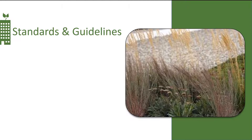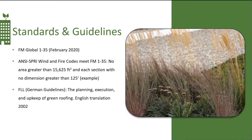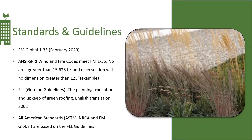Standards and guidelines: FM Global 1-35 Property Loss Prevention Data Sheet is often used for certain insured public buildings, providing general recommendations for selecting and installing vegetated roof systems in areas where wind design is less than 100 miles per hour and where it's not susceptible to wildland fire. ANSI SPRI Wind and Fire Codes from 2017 meet FM 1-35, where, for example, no area of green roof can be designed more than 15,625 square feet, and each section of vegetated roof can be no greater than 125 feet. FLL are the original German guidelines for designing green roofs — the planning, execution, and upkeep of green roofs — translated into English in 2002. All American standards, ASTM, NRCA, and FM Global, are based off the FLL guidelines.